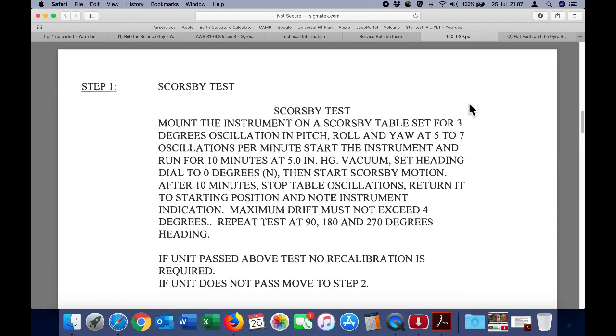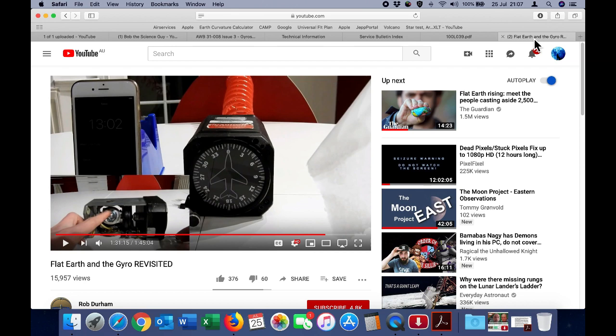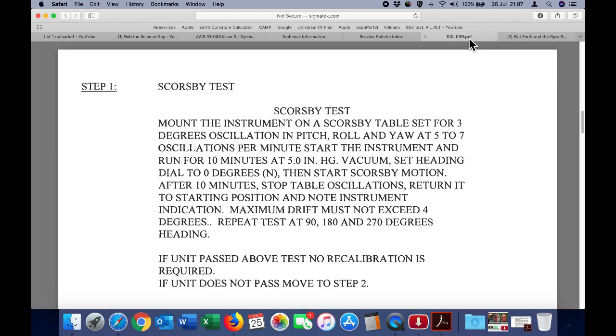That is to mount the instrument on a Scoresby table set for 3 degrees oscillation in pitch, roll and yaw at 5 to 7 oscillations per minute. Start the instrument and run for 10 minutes using 5 inches of mercury vacuum. And remember, Rob powered his with compressed air. It's designed to operate from vacuum. Set the heading dial to 0 degrees, then start the Scoresby motion. After 10 minutes, stop the table oscillations, return it to starting position, and note instrument indication. Maximum drift must not exceed 4 degrees.